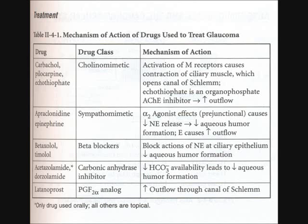Another drug type is latanoprost. Latanoprost is classified as a PGF2-alpha analog. When you give latanoprost to a patient with glaucoma, it basically increases the outflow of the canal of Schlemm — it causes a kind of vasodilation so the fluid flows faster and doesn't blockade. Those are the mechanisms of action of the drugs to treat glaucoma. Remember, there are two types of glaucoma: open angle glaucoma and angle closure glaucoma.